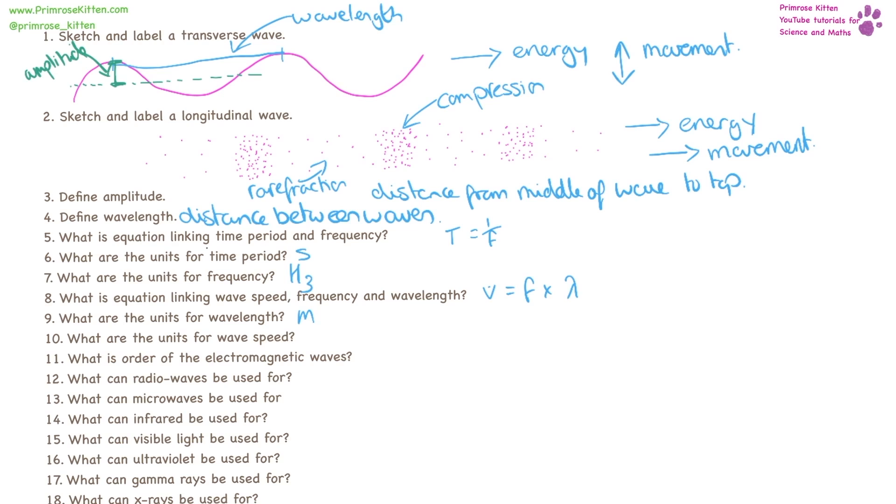The order of electromagnetic waves: radio waves, microwaves, infrared waves, visible lights, ultraviolet lights, gamma rays, x-rays.